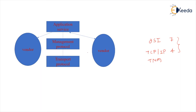Application service, management protocol, and transport protocol do their work at the layer where they are situated. For example, transport protocol in the OSI model at layer four performs the functions of layer four. Management protocols such as CMIP and SNMP do their work at their respective layers. Application service handles the conversion of raw data into suitable data to be transmitted or received between different vendors. Vendors are connected directly to the application service layer.